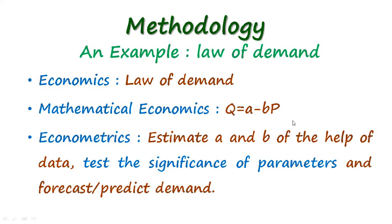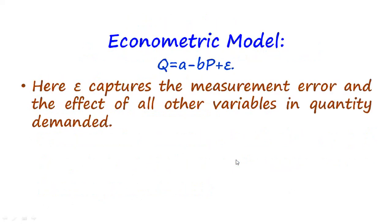Econometrics utilizes economic laws and theories, converts those laws in terms of equations, and tries to quantify the equations with the help of data. Basically, econometrics has three purposes: the first is to estimate the coefficients of an economic model or equation; the second is inference, also called hypothesis testing; and the third is forecasting or predicting the value of the dependent variable.